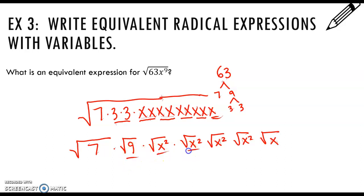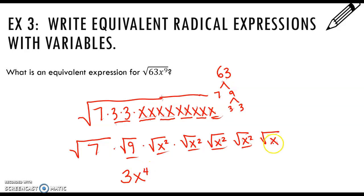These are all the perfect squares I can take the root of. The square root of 9 is 3, and the square root of x squared is x — so I have 3 times x to the fourth from the four pairs of x's. The remaining x and the 7 I can't take the square root of, so I write 7x inside the radical.